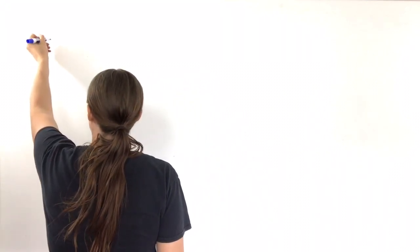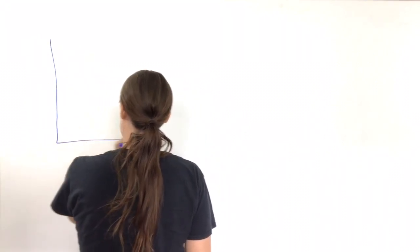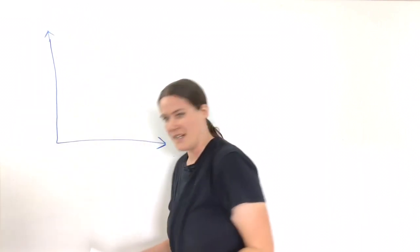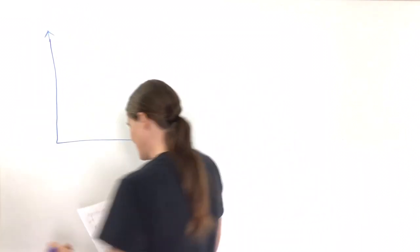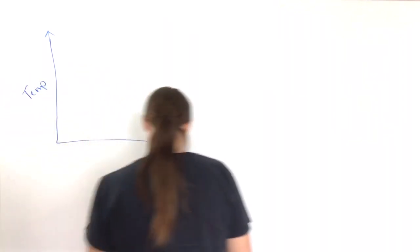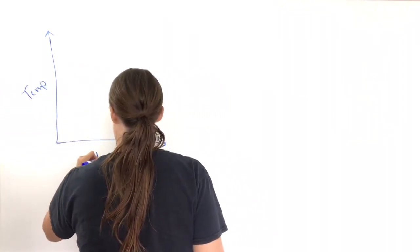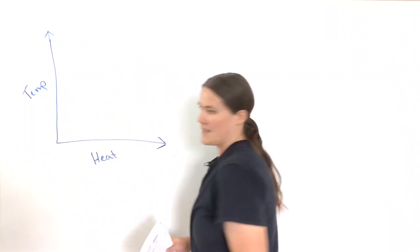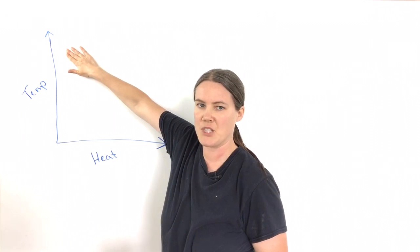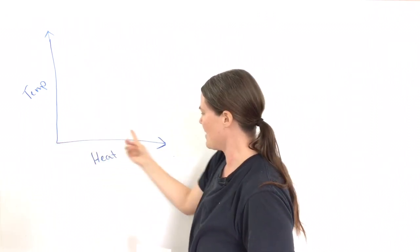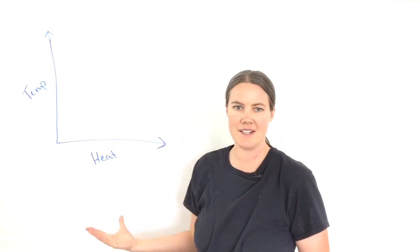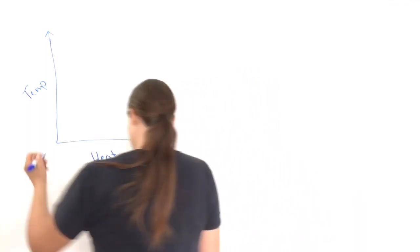So, let's just look at a heating and cooling curve. This axis here is the temperature and this axis here is the heat. If you're going up on this axis, you're increasing the temperature. If you're going to the right on this axis, you're adding heat.